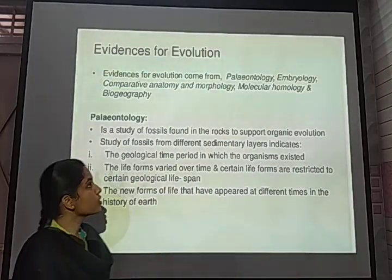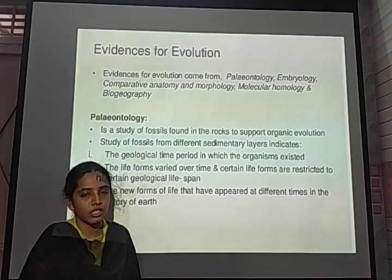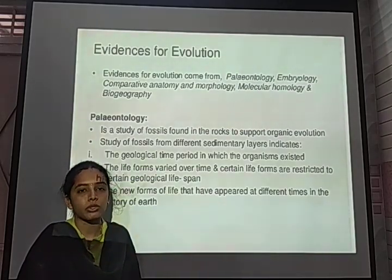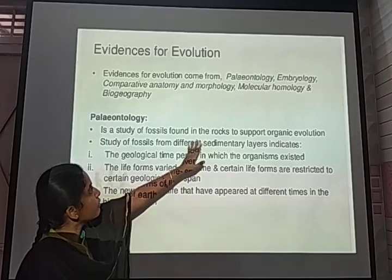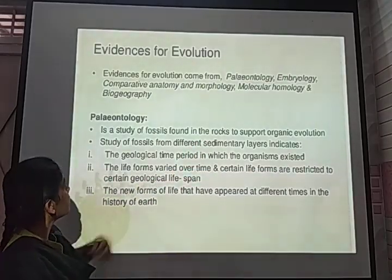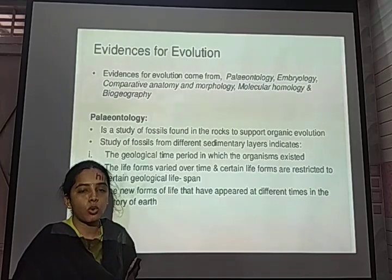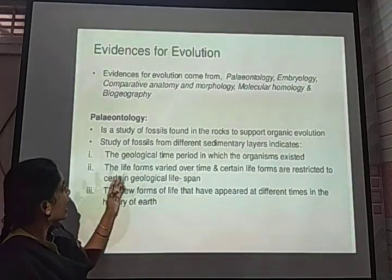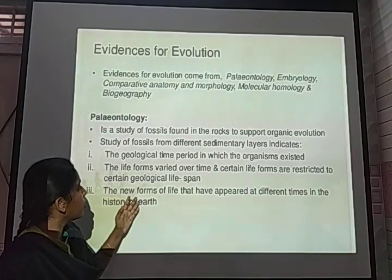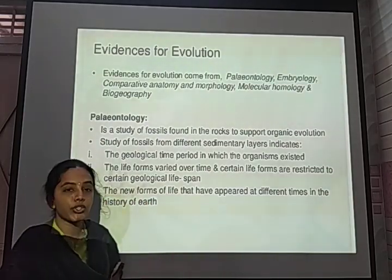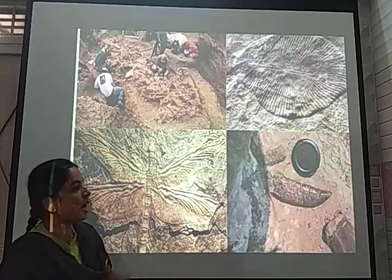Some evidence for evolution includes paleontology, which is the study of fossils. Fossils are the remains of plants or animals usually found in the sediments of rocks. Paleontology is the study of fossils found in rocks to support organic evolution. It is helpful for understanding geological time periods, with organisms differentiated into eras, epochs, and periods. New life forms appeared at different times throughout the history of the earth, and fossil imprints have been found.